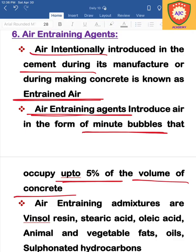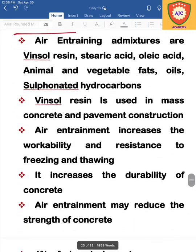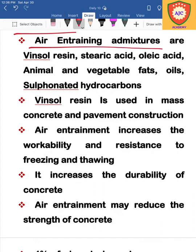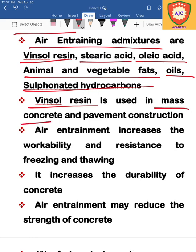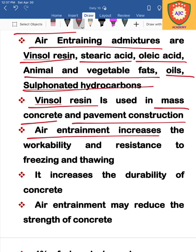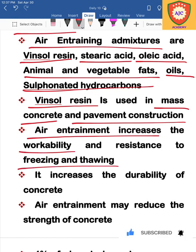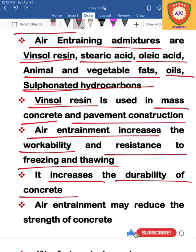The air-entraining admixture uses materials such as Vinsol resin, stearic acid, oleic acid, animal and vegetable fats, oil, and sulfonated hydrocarbons. Vinsol resin is used in mass concrete construction. Benefits include increased workability, freezing and thawing resistance, and increased durability.